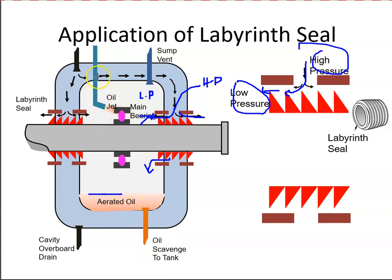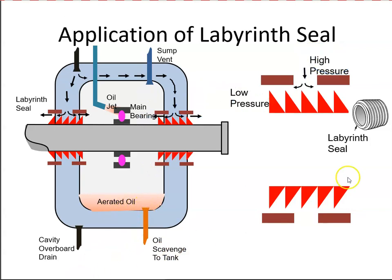For example, if the oil pressure system is supplying oil at one cubic meter per minute, then the scavenge system would have to remove three cubic meters of aerated oil, because it's a mixture of air and warm expanded oil. This is an image of a labyrinth seal — you can see the knife edges along the seal.